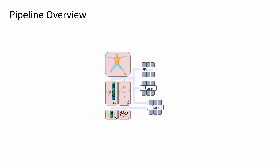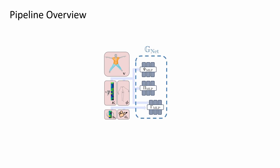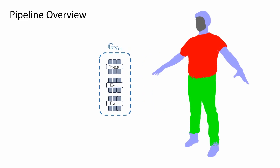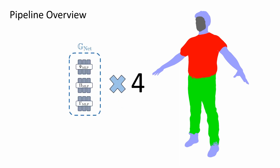We use triplets of small MLPs per layer. We call a single triplet a Gaussian net. Our method is very composable. Using Gaussian nets, we can independently model different parts of an avatar. In this case, we use 4 different Gaussian networks.